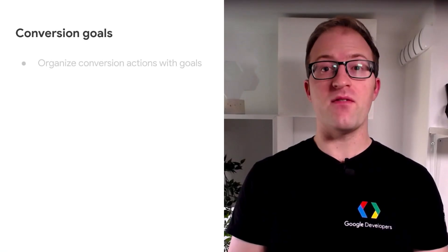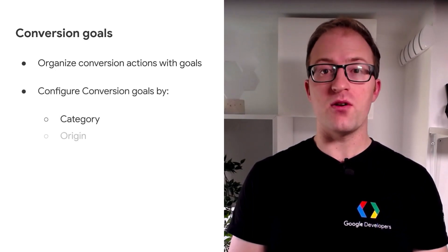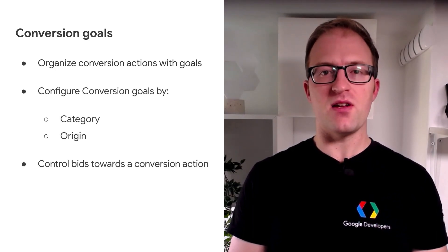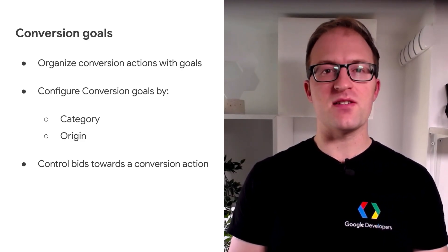If you were using conversion actions, you can now create conversion goals. This new resource helps you organize your conversion actions so they can more easily optimize towards your advertising objectives. They can be configured by origin and category and can control whether Google Ads will bid and optimize towards an associated conversion action. More details on how to configure them can be found in the conversion goals guide on our developer site.